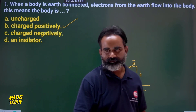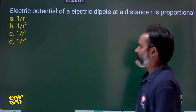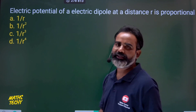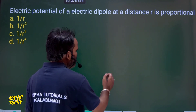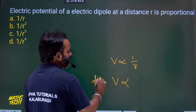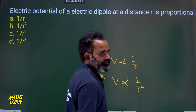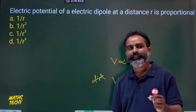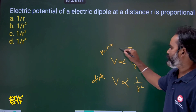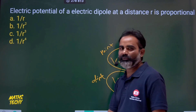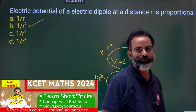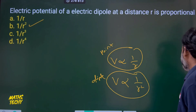Next question: Electric potential of an electric dipole at a distance r is proportional to what? Looking at the expression for electric potential due to a point charge versus a dipole — for a dipole it is inversely proportional to r squared (1/r²), whereas for a point charge it is 1/r. So the answer is 1/r², option B.